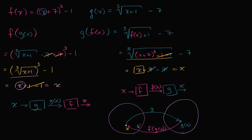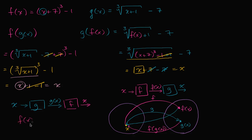And vice versa — if you start with x and apply f first, you get to f of x. Then you apply the function g to that, and you get back to x. So this is g of f of x. Since we get a round trip either way, we know that the functions g and f are inverses of each other. In fact, we can write that f of x is equal to the inverse of g of x, and g of x is equal to the inverse of f of x.